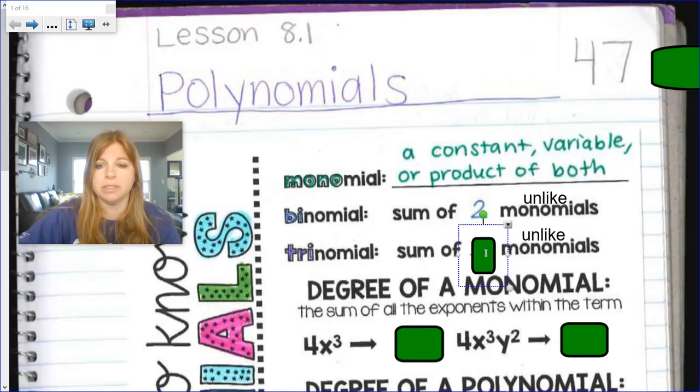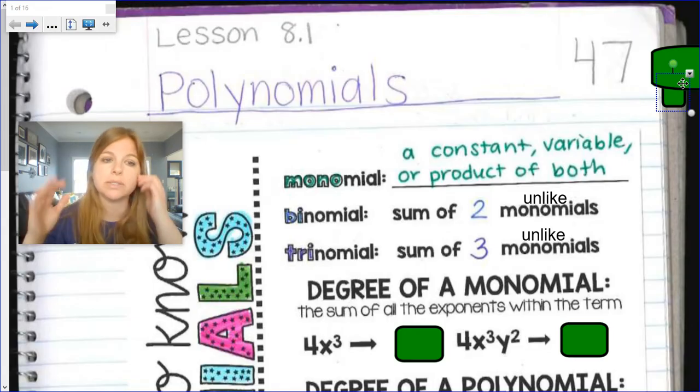A trinomial is the sum of 3 unlike monomials. So same idea as a binomial, but a trinomial would be 3.